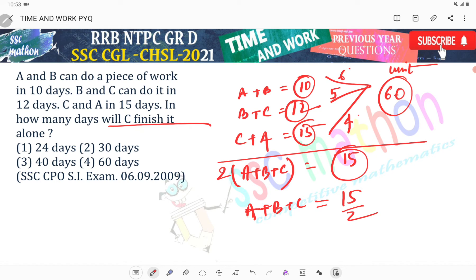Now C alone finish the work. So A plus B, 15 by 2 minus 6, that is equals to C.